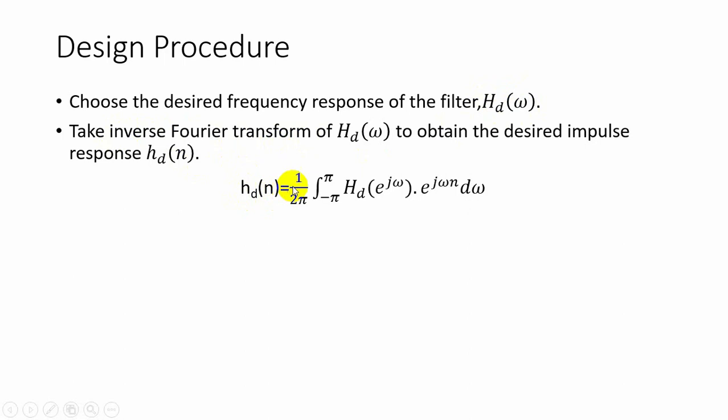h_d of n is given by 1 by 2 pi integral minus pi to pi, H_d of e power j omega, that is the desired frequency response, multiplied by e power j omega n into d omega. Next we have to choose the window sequence.